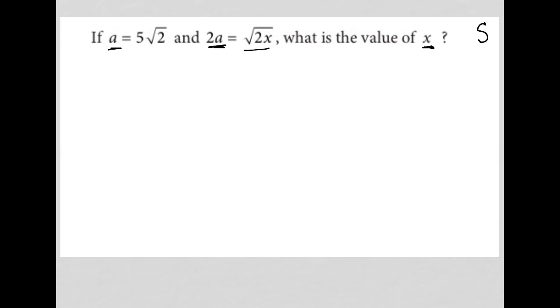How do I combine these things? Because x is only present in the second equation, and I can't solve this if I have two unknown things. But I do know what a is. So let's take this second equation, 2a = √(2x), and replace a with 5√2, because a = 5√2.